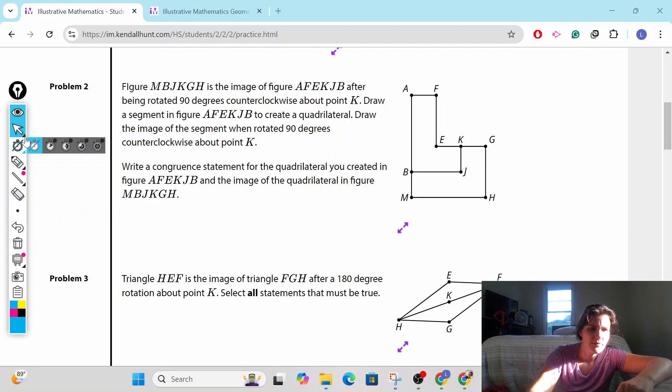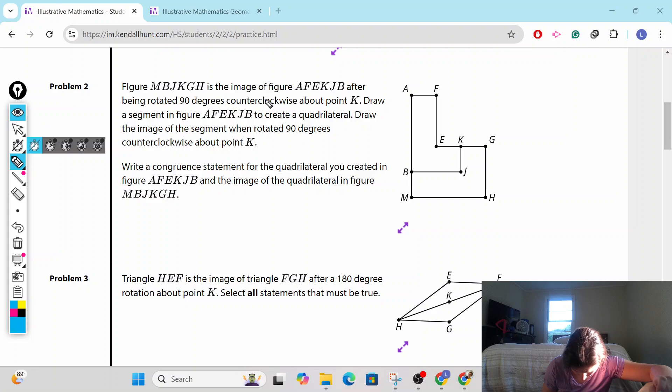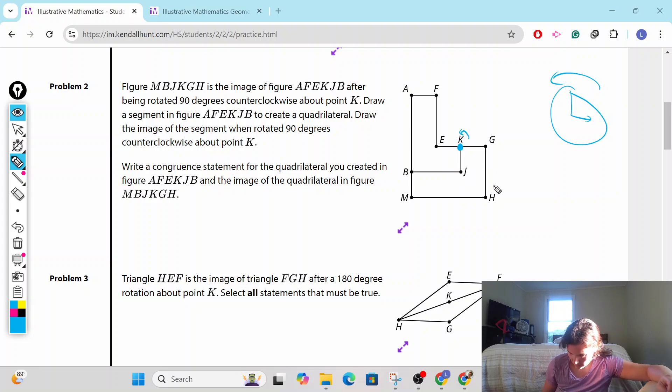Problem two. Figure M, B, J, K, G, H is the image of figure A, F, E, K, J, B after being rotated 90 degrees counterclockwise around point K. So here's my clock. Counterclockwise is backwards, so we went that way.